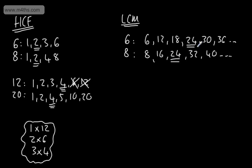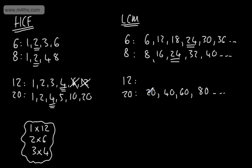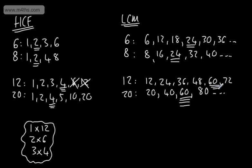That gives us the lowest common multiple — it's the first number that 6 and 8 both go into. If we look at 12 and 20, one way we could do this is to write out the multiples of 20: 20, 40, 60, 80, and so on. Does 12 go into 20? No. Does it go into 40? No. Does it go into 60? Yes — it goes in 5 times. So the lowest common multiple is 60. Alternatively, listing the multiples of 12: 12, 24, 36, 48, 60, 72 — we can see the lowest common multiple is 60, the first number both will go into.